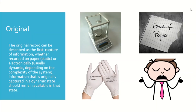The next point is Original. The original record can be described as the first capture of information, whether recorded on paper or electronically. For example, if you have a weighing machine that produces a printed slip and you transcribe it into your logbook but then lose the printed sheet — this does not follow the original principle, because the printed slip is the original where data was first captured.